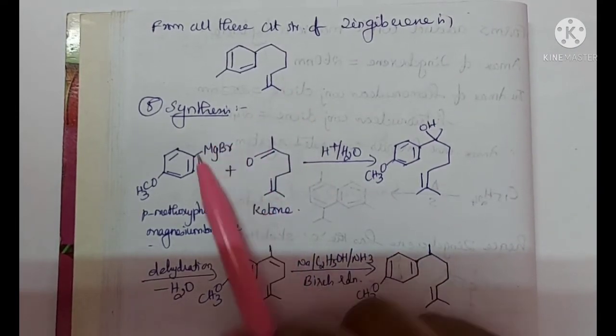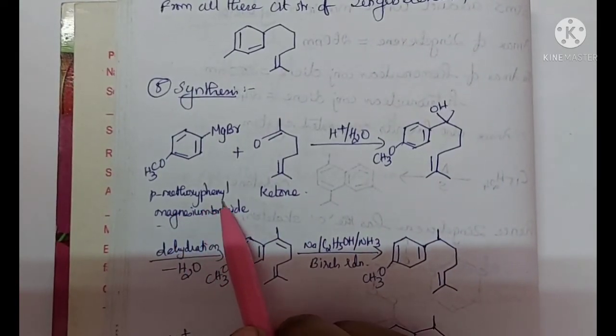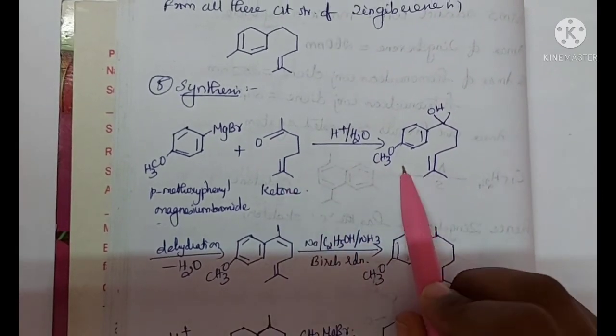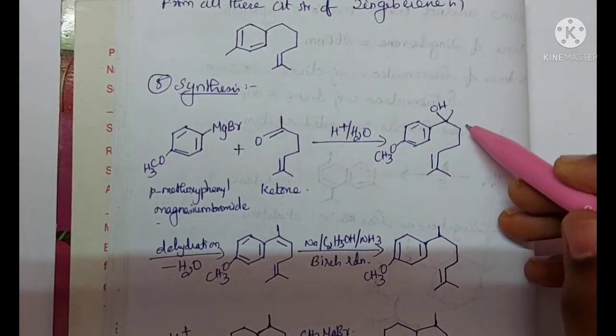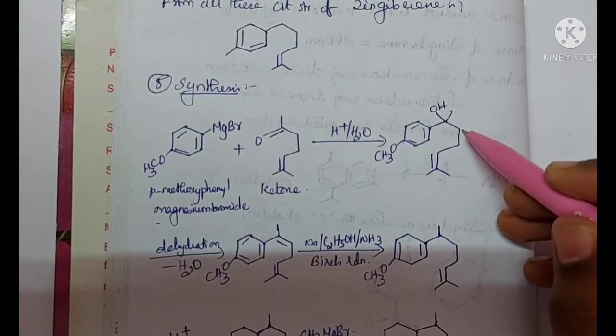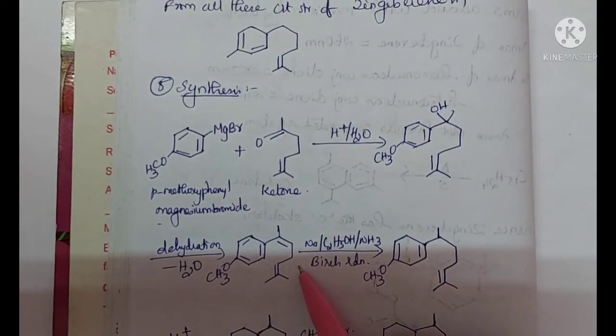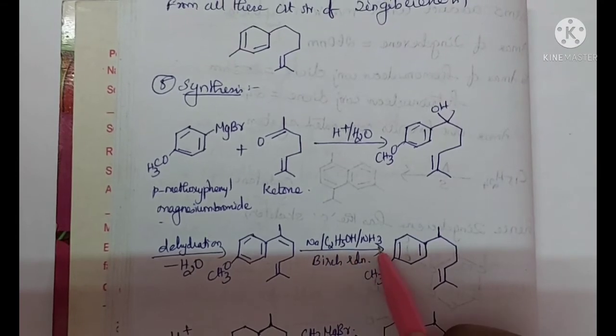For synthesis, we take two compounds: para-methoxy phenyl magnesium bromide and a ketone. This on hydrolysis, we get an intermediate compound, and this on dehydration, this OH and the hydrogen from this carbon is lost and we get a double bond here. And this is further subjected to Birch reduction, that is sodium, ethanol, and ammonia.